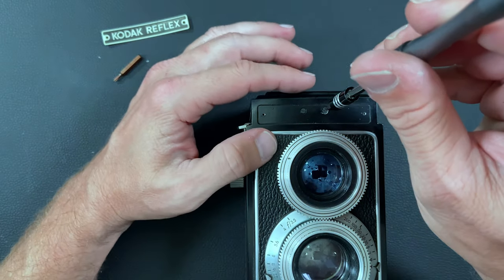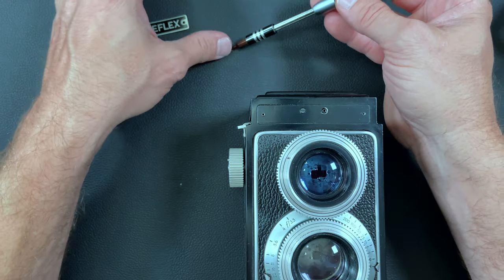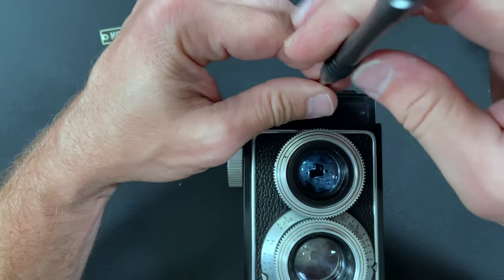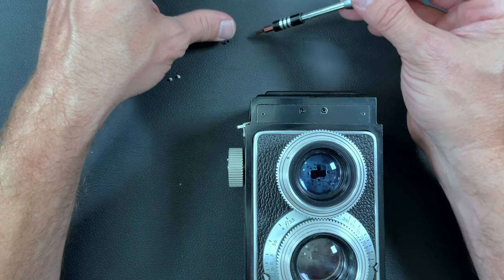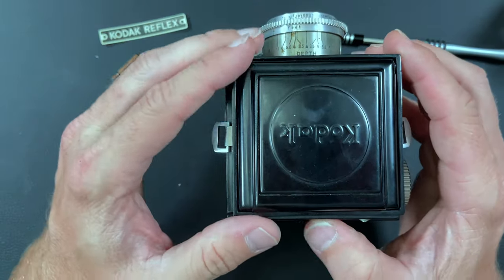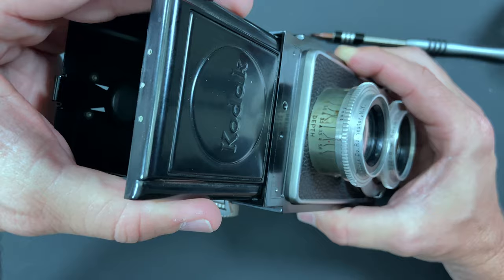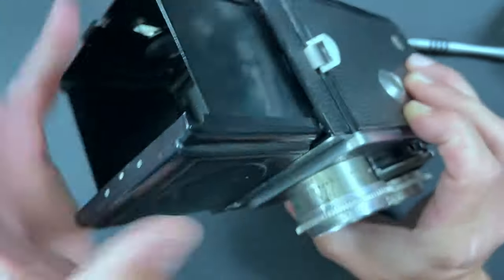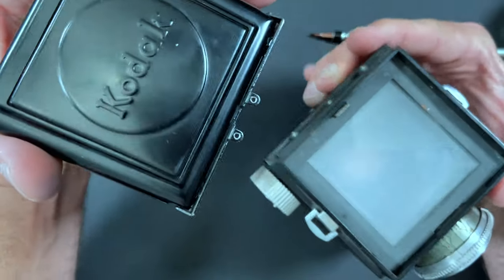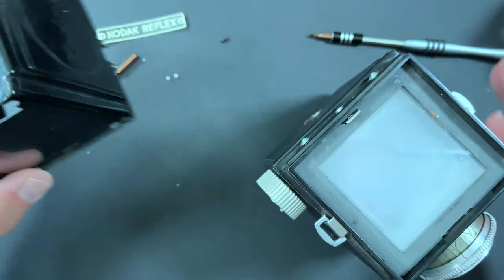Those two little guys out. So you can see there's the two flat head screws that we just had and the whole viewfinder mechanism just comes right off.